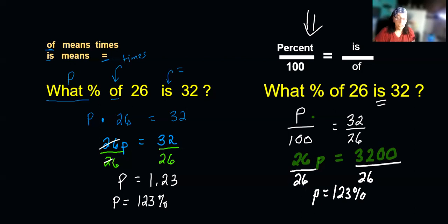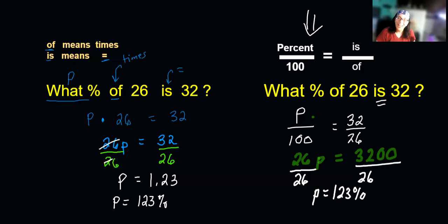Using the first method, you get the decimal answer and you have to convert it to a percent. If you use the proportion method, it's already in percent. Whichever method works better for you — I'm going to be doing a couple more problems in this playlist, so check them out. Thank you, and I hope you have an awesome day. Please subscribe.